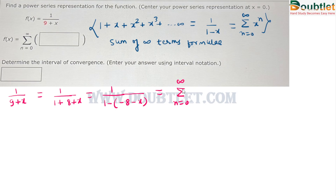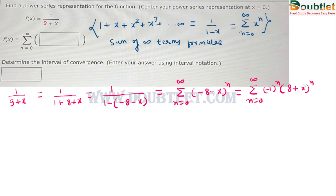We write (minus 8 minus x) to the power n in place of x. Expanding this, the sum from n equals 0 to infinity becomes (minus 1) to the power n times (8 plus x) to the power n. So the power series representation of the function is the sum from n equals 0 to infinity of (minus 1)^n times (8 + x)^n.